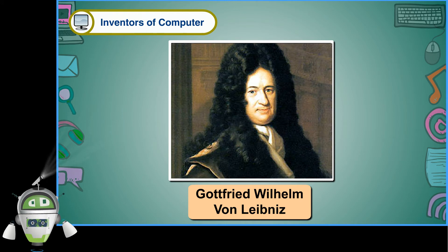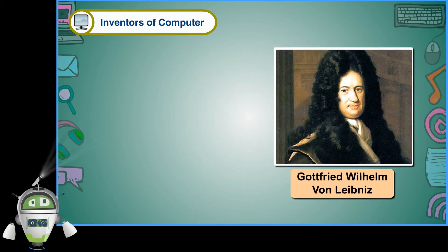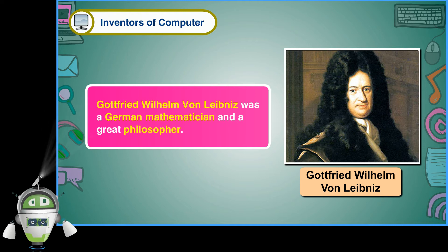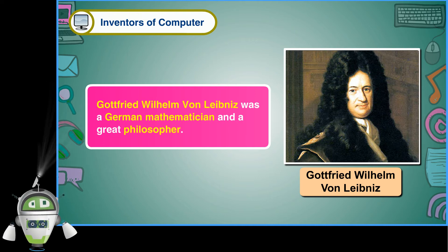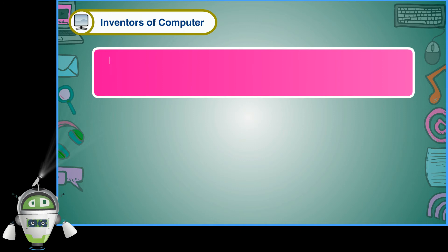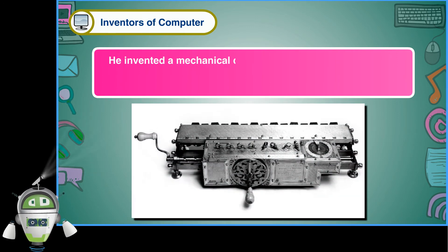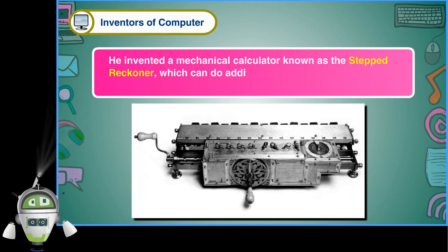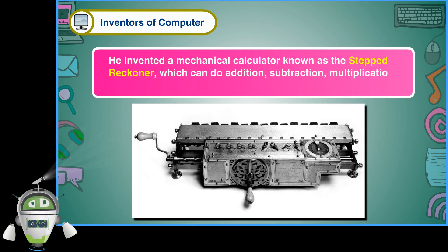Gottfried Wilhelm von Leibniz was a German mathematician and a great philosopher. He invented a mechanical calculator known as the Stepped Reckoner, which can do addition, subtraction, multiplication, and division.